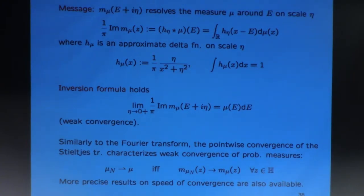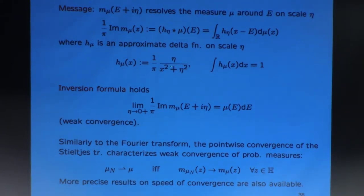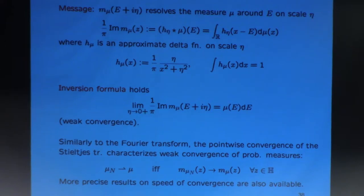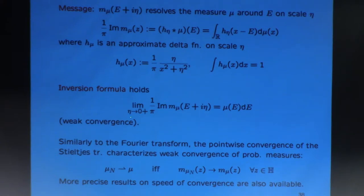If the original measure is already smooth you don't see a drastic change, but if it's a point mass or a few point masses, the Stieltjes transform smooths it out — the scale of the smoothing depends on eta. This is why we are so interested in small eta: the smaller the eta, the more precisely the Stieltjes transform resolves the measure.